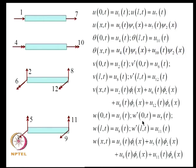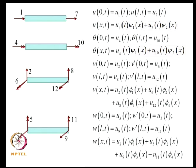The axial degrees of freedom are 1 and 7; U at 0 gives U1 and U at L gives U7, and within the element we interpolate U(X,T) using these functions. Similarly theta is in terms of U4 and U10 using linear interpolation. V is in terms of U2, U6, U8, U12 using cubic polynomials, and W is in terms of U3, U5, U9, U11 using cubic polynomials.